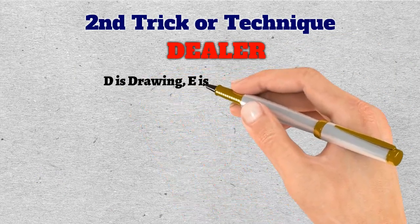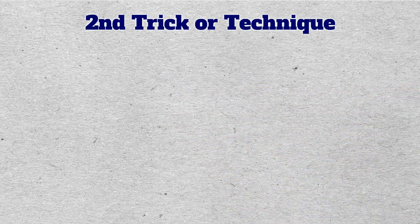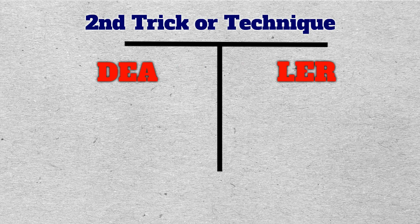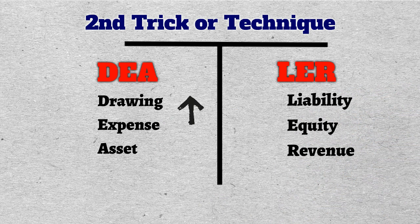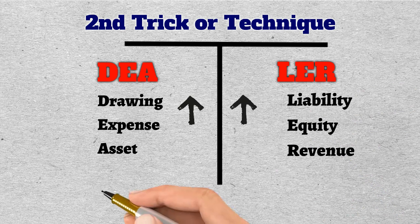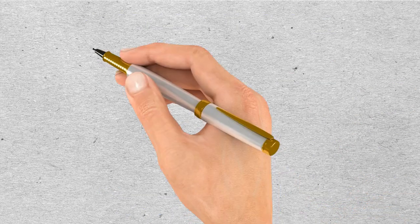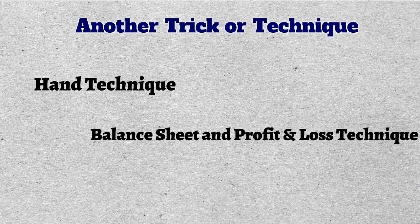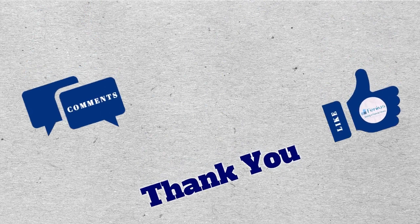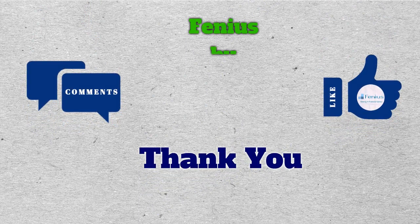Another trick to remember the rules of debit and credit is the word DEALER: D is Drawing, E is Expense, A is Asset, L is Liability, E is Equity, and R is Revenue. Split this word into two halves and draw a T account. The three letters D, E, A on the left-hand side represent the normal balance for Drawing, Expense, and Asset — meaning these increase with a debit entry. The three letters L, E, R on the right-hand side represent the normal balance for Liability, Equity, and Revenue — meaning these increase with a credit entry. To decrease an account, do the opposite. There are also two more techniques — the hand technique and the balance sheet and profit-and-loss technique — which may be covered in an upcoming video. I hope you understood today's video; write any questions in the comment section below.